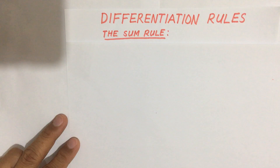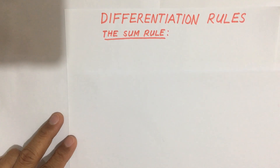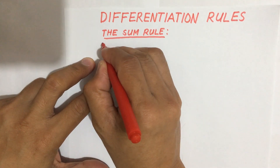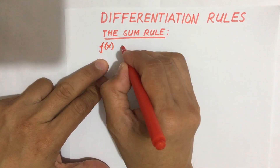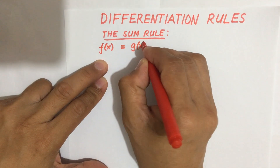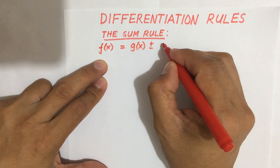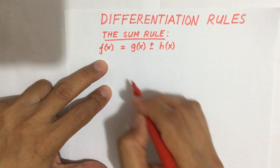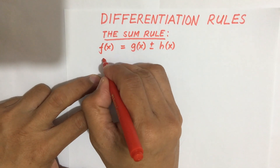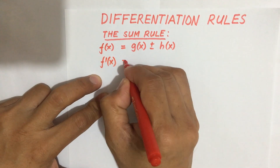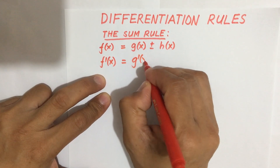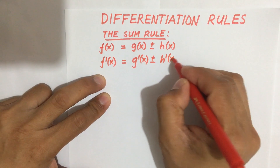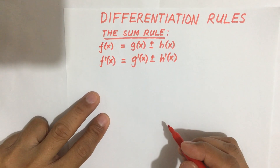So we have the sum rule. If you can still remember from our previous discussion, if you have f(x) equal to the sum of two functions, like g(x) plus or minus h(x), then the derivative f'(x) is equal to g'(x) plus or minus h'(x). That is case number one of the sum rule.